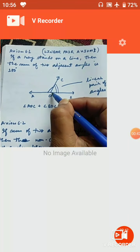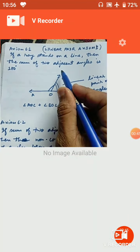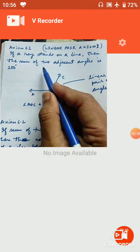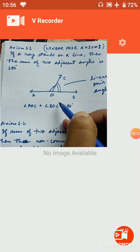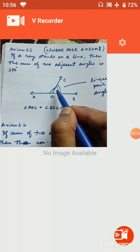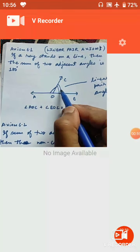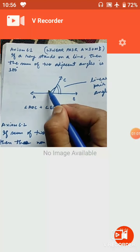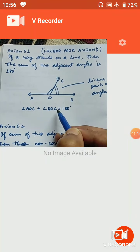Axiom 6.1: if a ray stands on a line — ray is OC, line AB is standing — then the two adjacent angles AOC and BOC are 180 degrees. This was also covered in class 7. So, if the sum of adjacent angles is 180 degrees, they are called Linear Pair Angles.